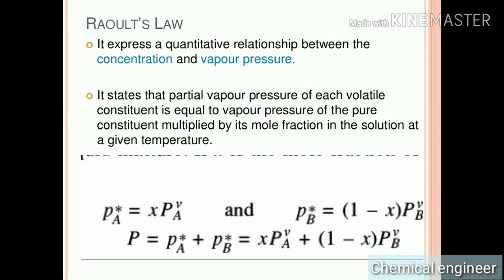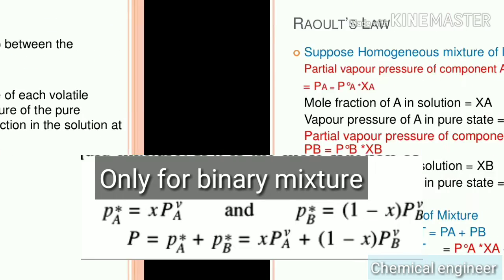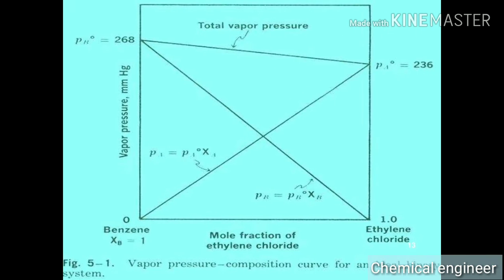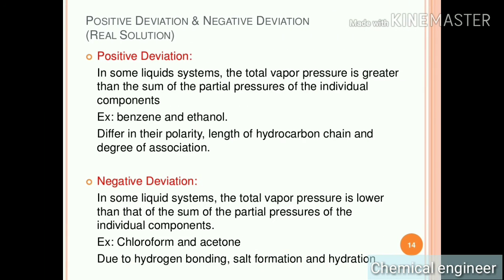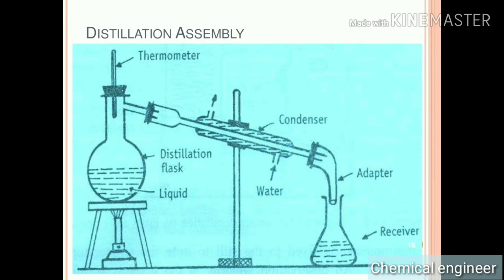Raoult's law — this law is only applicable to a mixture at equilibrium. It gives the quantitative relationship between concentration and partial pressure. The statement reads: the partial pressure of a component is directly proportional to its vapor pressure in the vapor phase, that is PA is directly proportional to PAV. PA is given as shown in the equation. PA is the partial pressure of A in the mixture at equilibrium. X is the mole fraction of A, and 1 minus X is the mole fraction of B. Total pressure is the sum of partial pressures, as shown in the equation. If total vapor pressure is more than the total partial pressure calculated using Raoult's law, it is called positive deviation from ideality; if lower, it is called negative deviation from ideality.